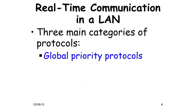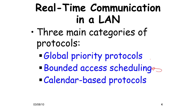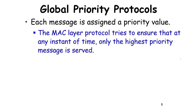There are three main categories of LAN protocols: global priority protocols, bounded access, and calendar-based protocols. Bounded access induces some degree of rate control so the network cannot be taken over. Calendar-based protocols are similar to bounded access in design philosophy, while global priority is similar to EDF and RMS in design philosophy, though the actual design is totally different.